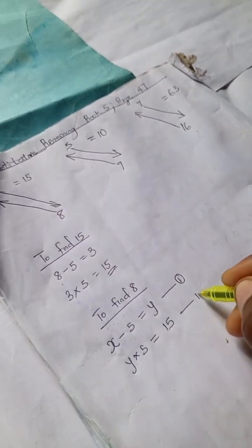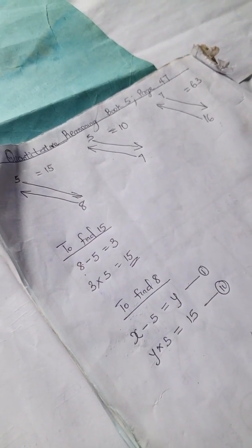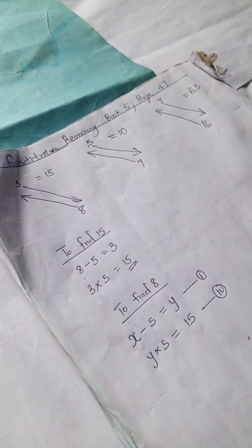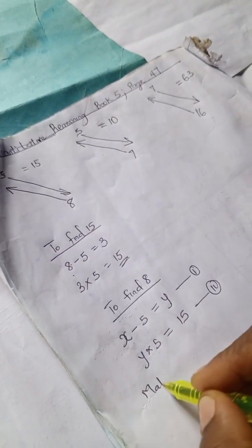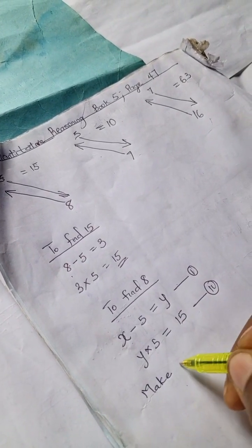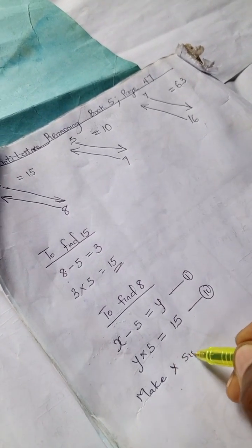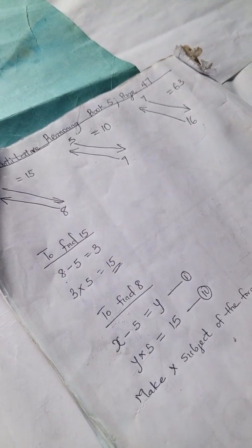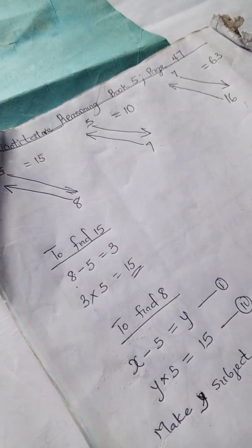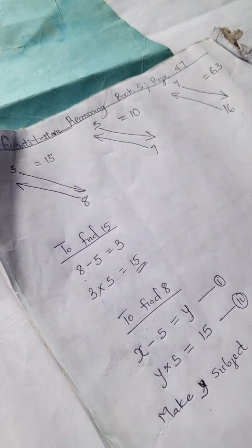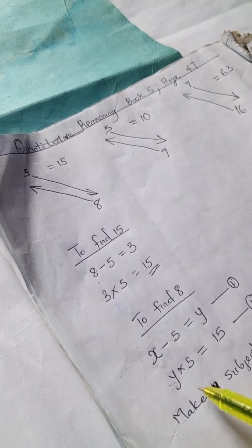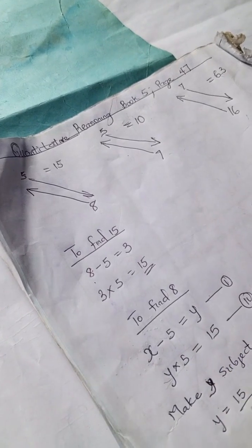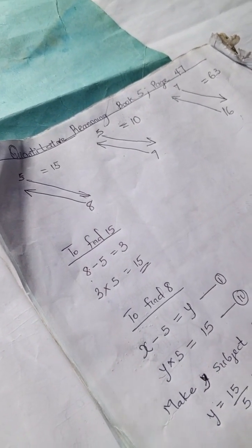Let's call this equation 1 and this equation 2. Remember, this is grade 5 work and children at this level are familiar with algebraic processes. They can make a variable the subject of the formula. So we make x the subject in equation 1, and y the subject in equation 2. From equation 2, y equals 15 divided by 5, which gives y equals 3.